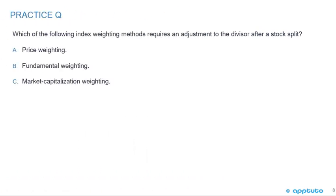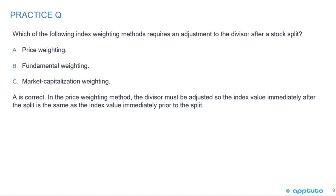Quick question with no math: which index weighting method requires an adjustment to the divisor after a stock split? A, price weighting; B, fundamental weighting; or C, market capitalization weighting. The answer is A. In the price weighting method, the divisor must be adjusted so the index value immediately after the split equals the index value immediately before the split.